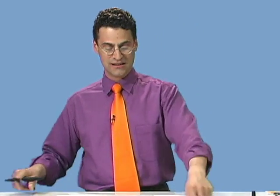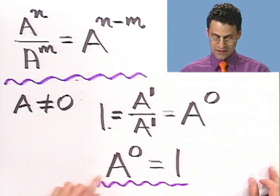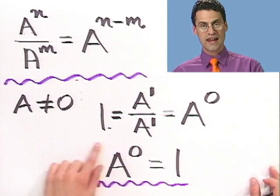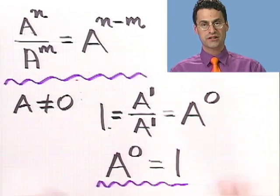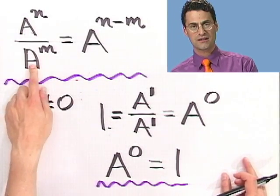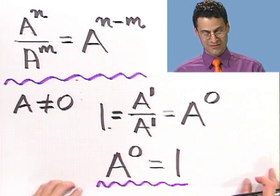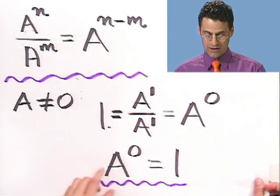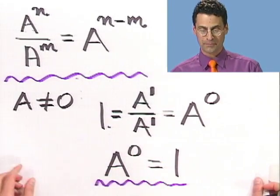People hear that and always ask, why is that true? Well, now you see it's just a fact about canceling. You can see it for yourself — anything to the 0 is 1. Now notice we can't put 0 to the 0. Mathematicians start to shake and get the willies, because that would sort of mean we're dividing by 0, and that's not good. But if a is any number that's not 0, you raise it to the 0 power, you always get 1. So that's a great consequence of this fact.